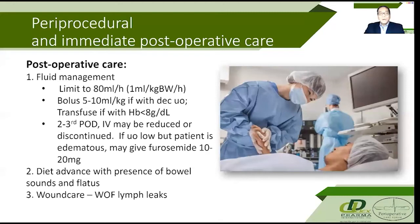Prolonged lymph leakage increases the risk of bacterial invasion of the perigraft lymphatics and may result in early prosthetic graft infection. Most minor lymph leaks will resolve in three to five days. If a groin lymph leak is copious and has not decreased or closed in three to five days, wound exploration, ligation of the culprit nodes or lymph vessels, and reclosure is strongly recommended.